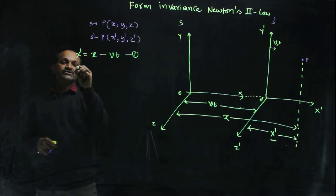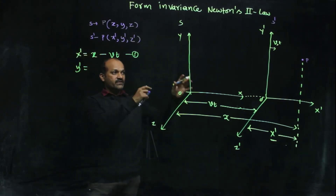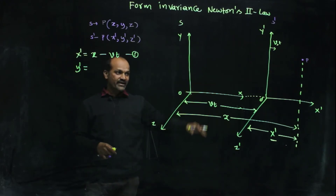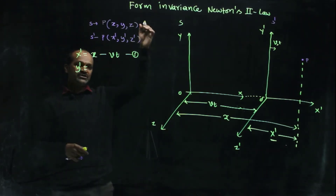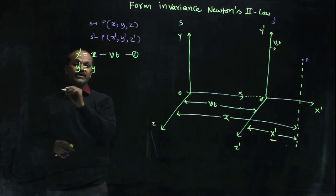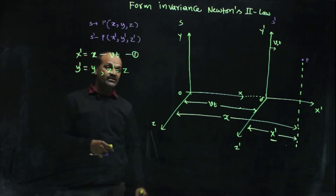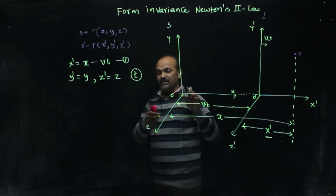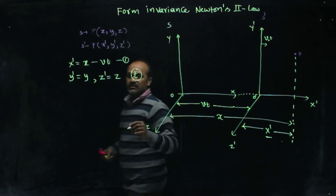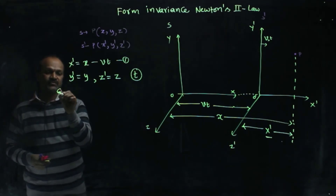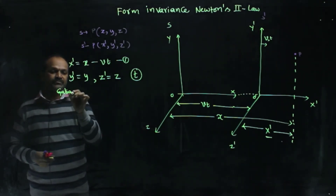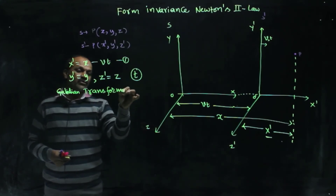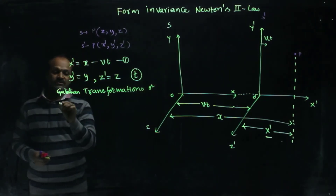If you write in terms of y-dash, what is the y-dash value? Because that reference frame is traveling with velocity v in the horizontal direction, there is no change in the vertical or z direction. So y-dash equals y. Similarly, z-dash equals z. In Galilean invariance, the time axis is not separately considered. These equations are called Galilean transformations, or Newtonian transformations.